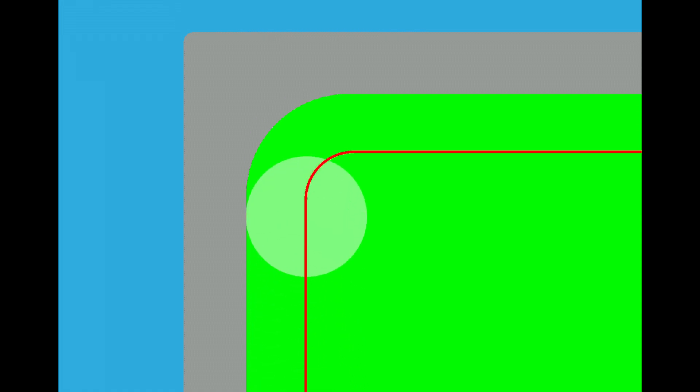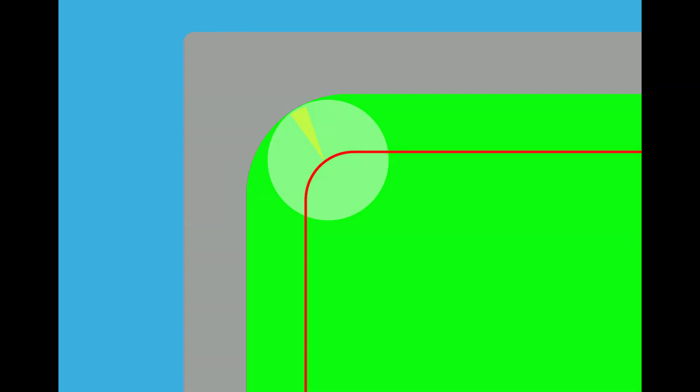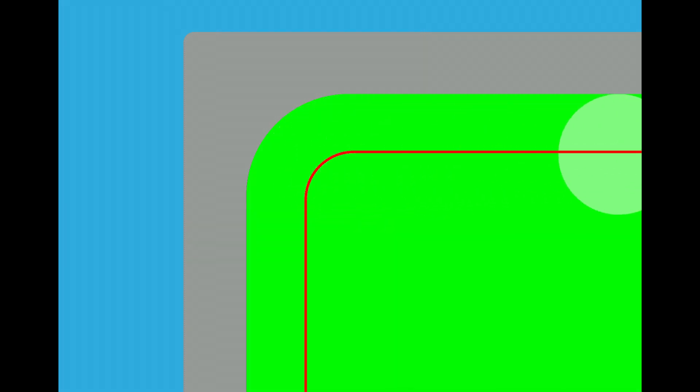A common misconception is that the internal corner radius of your part should match the tool radius used to machine the feature. This puts you into a high tool engagement scenario, which can cause issues like chatter marks. It is always best to have the corner radius modeled larger than the tooling intended to be used.